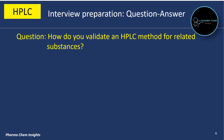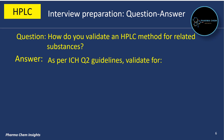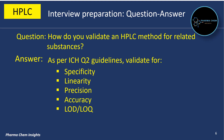Next question: how do you validate an HPLC method for related substances? As per ICH Q2 guidelines, validate for the following parameters: (1) specificity, (2) linearity, (3) precision, (4) accuracy, (5) LOD and LOQ (limit of detection and limit of quantification), (6) robustness, and (7) stability of solution.